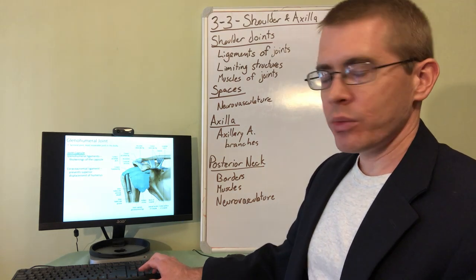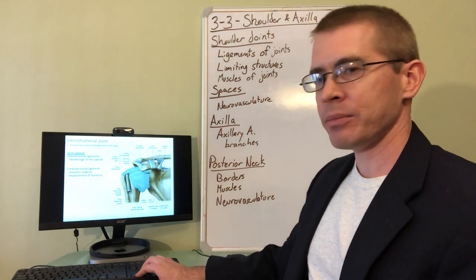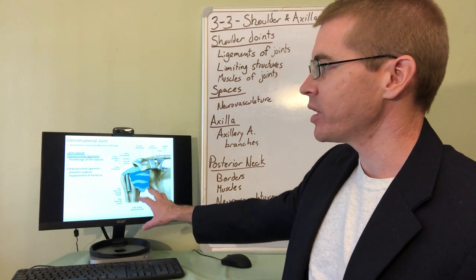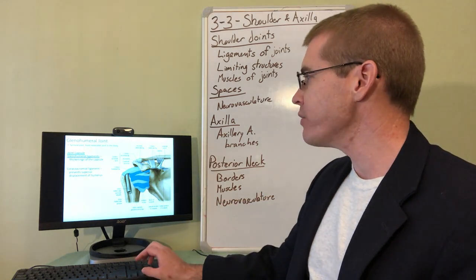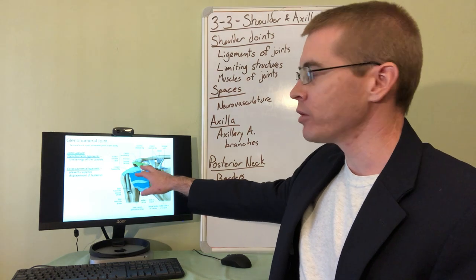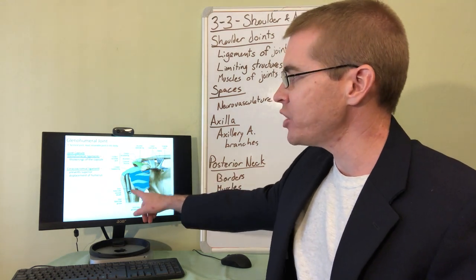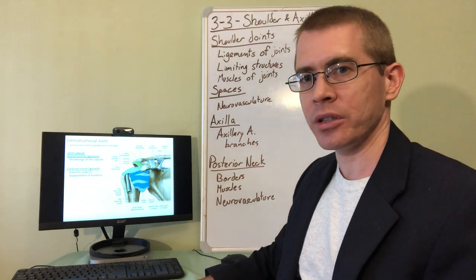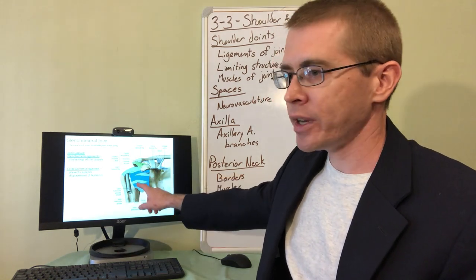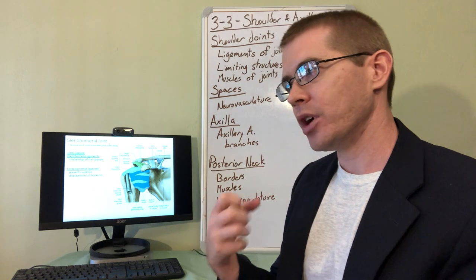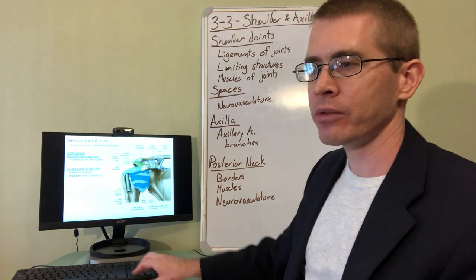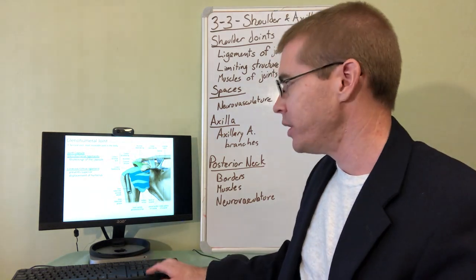So then we get into the glenohumeral joint, which features this large joint capsule. There are thickenings of that joint capsule that form the different ligaments that coordinate and restrict the movement of that joint. There's also a helpful ligament, the coracoacromial ligament, that restricts displacement of the humerus superiorly. So if there's a vertical force on the shoulder, the joint capsule doesn't have to absorb all of that force, it is helped by the coracoacromial ligament. So for that reason, vertical shoulder displacement is uncommon.